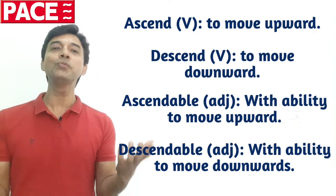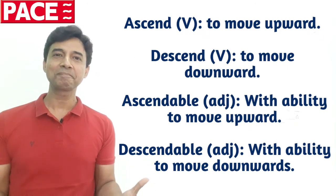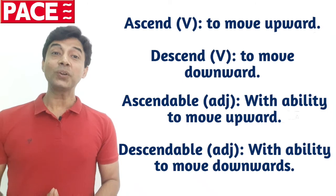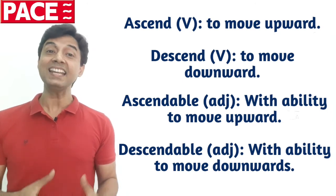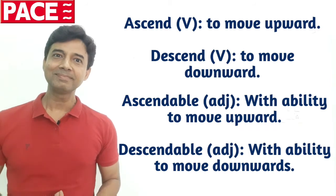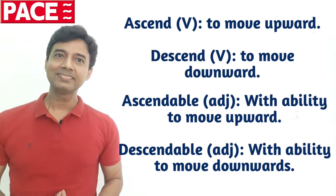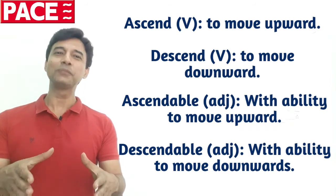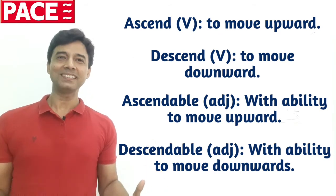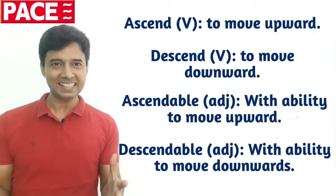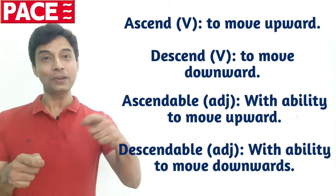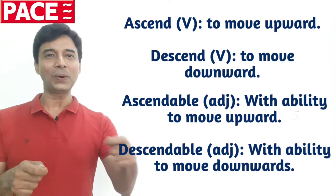And that is not a fixed position — it is also 'descendable,' meaning he can fall down. So do learn the meanings of ascendable, descendable, ascend, and descend. From this same root, we also get 'ascending order' and 'descending order.'